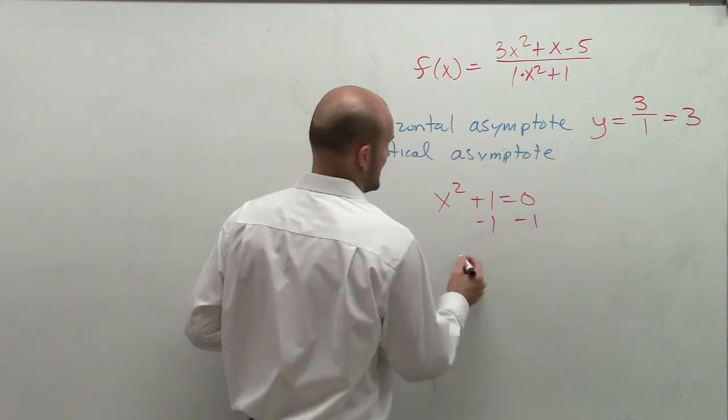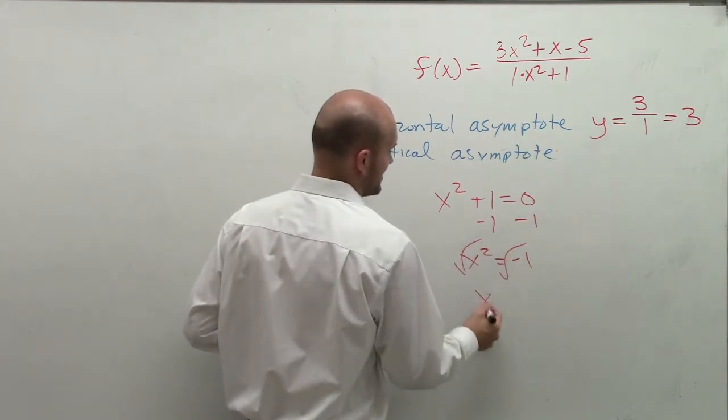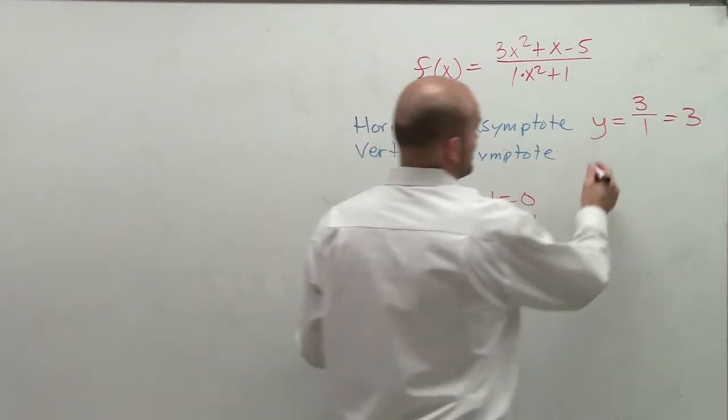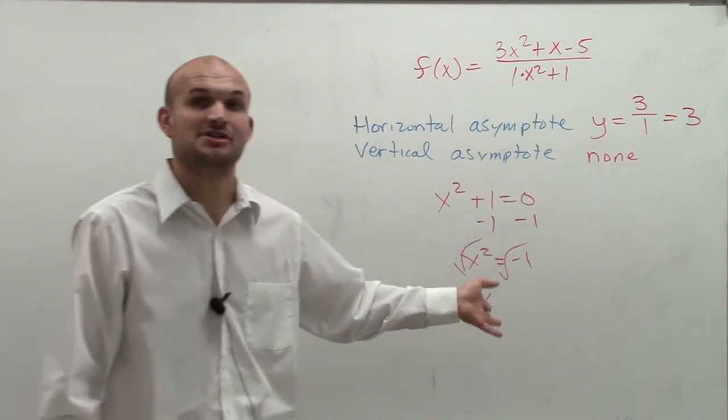Well, when solving for this, I get x squared equals negative 1 square root, and we notice we cannot take the square root of negative 1. So therefore, there are not going to be any horizontal asymptotes. This is actually dealing with an imaginary number, correct?